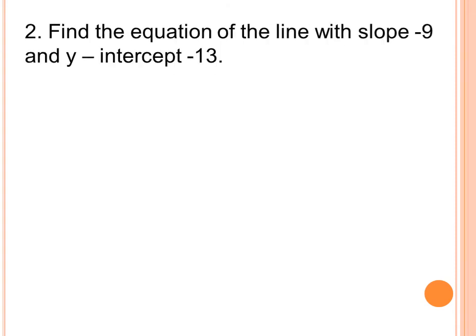Example number two: find the equation of the line with slope negative 9 and y-intercept negative 13. Let us write down the given: m is equal to negative 9, b is equal to negative 13.